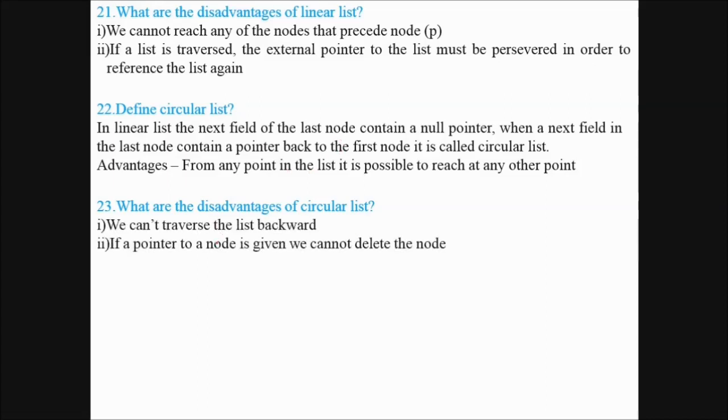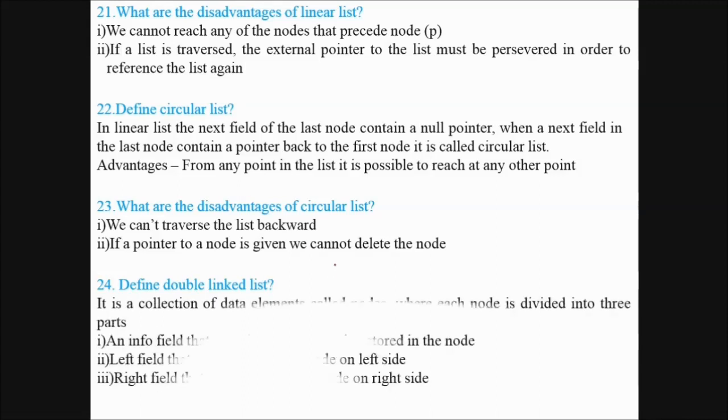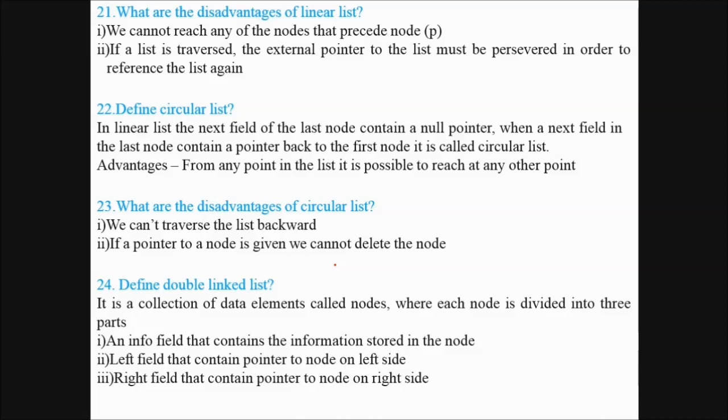What are the disadvantages of circular list? We cannot traverse the list backward. If a pointer to a node is given, we cannot delete the node. Define double linked list. It is a collection of data elements called nodes, where each node is divided into three parts: an information field that contains the information stored in the node, the left field and the right field. The left field contains the pointer to the node on the left side, and right field contains pointer to the node on the right side.